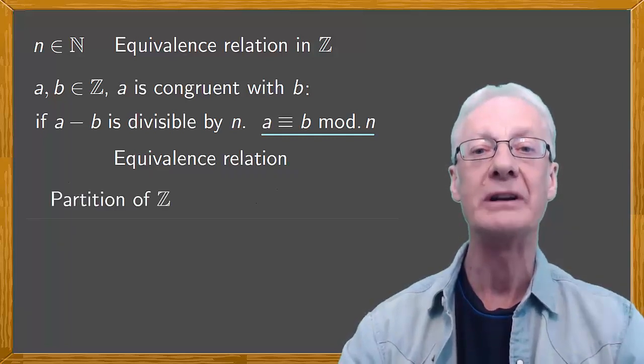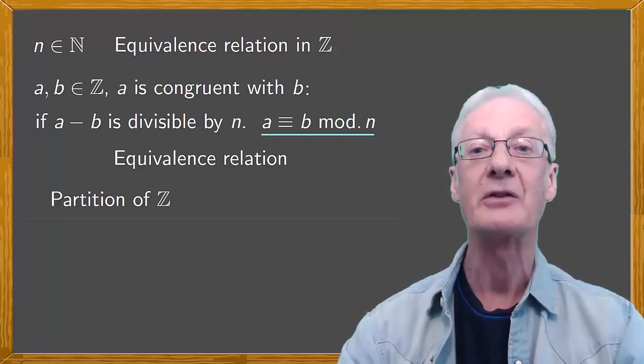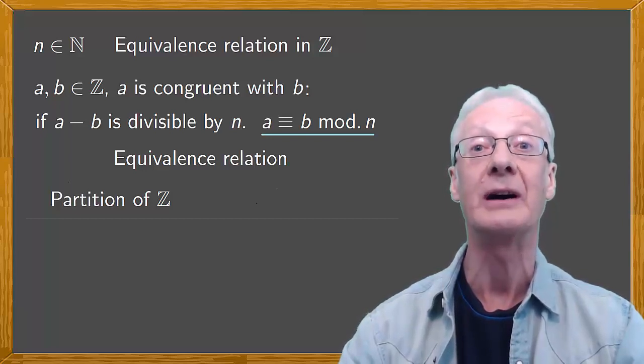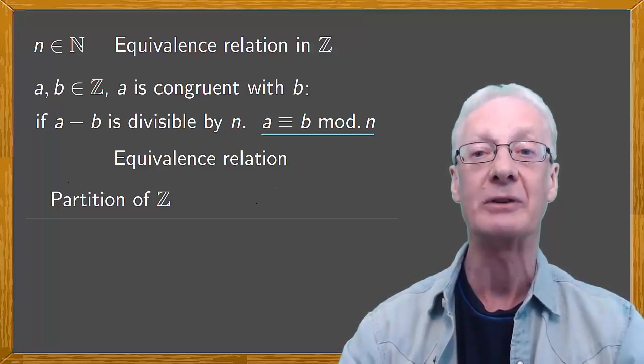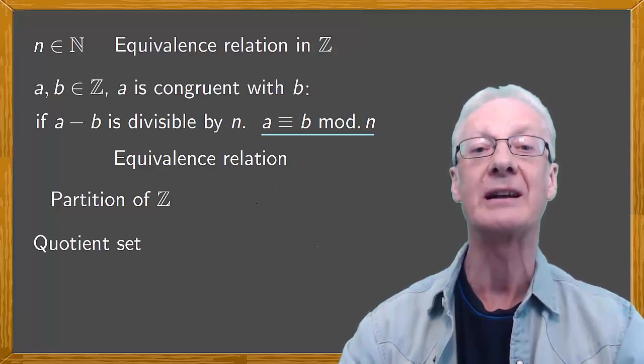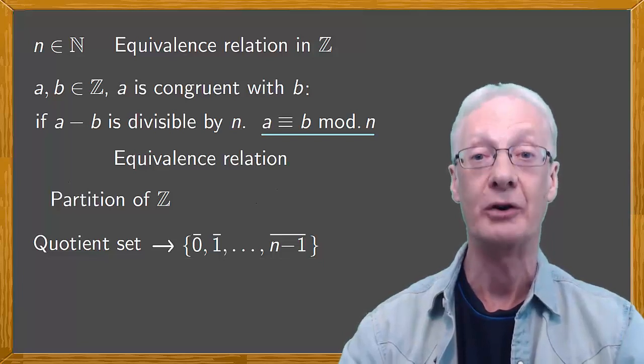So we can group its elements to form what's referred to as a partition of the set of the integers. You already know that in the case when n equals 7, corresponding to the days of the week, the quotient set is the numbers 0, 1, 2, 3, 4, 5, 6. In the general case, the quotient set is the numbers 0, 1, 2, 3, up to n minus 1, shown with a bar over the top.